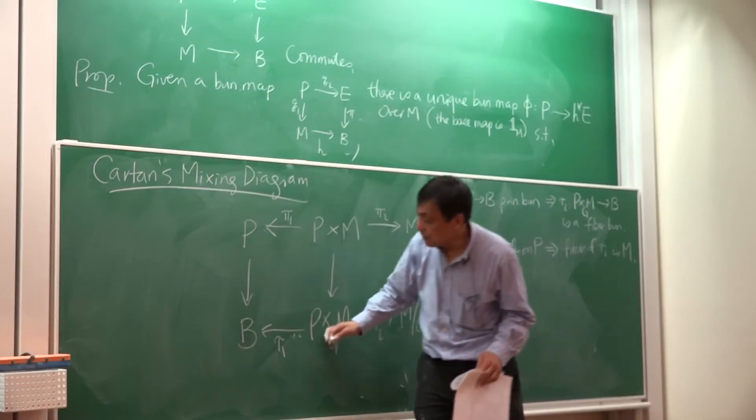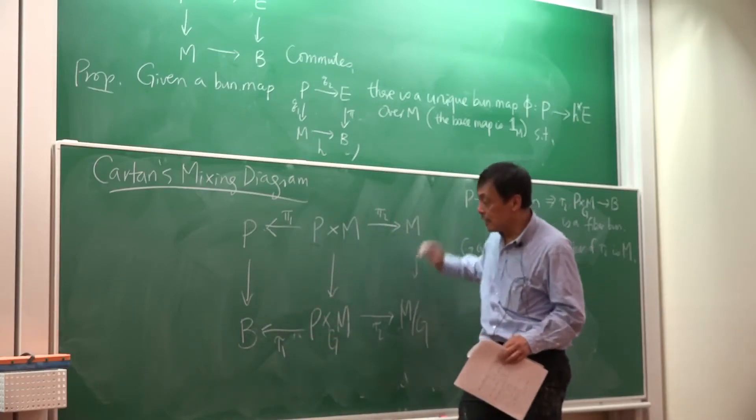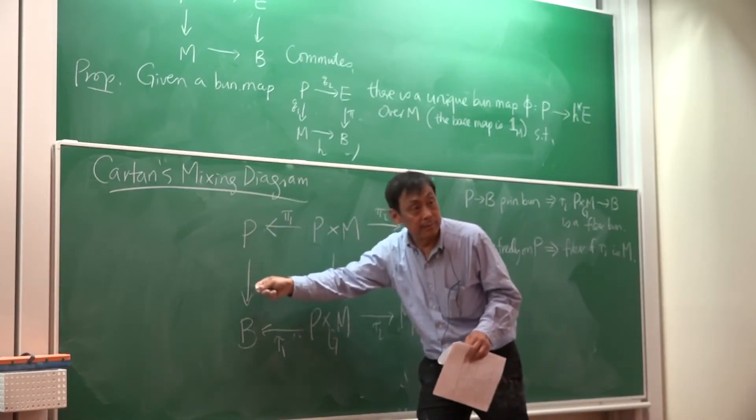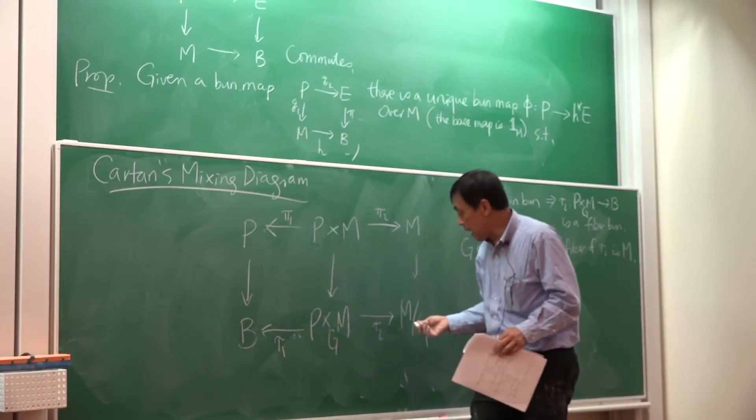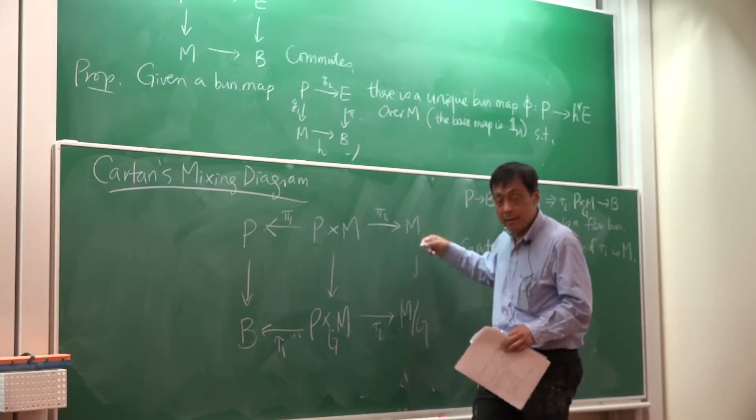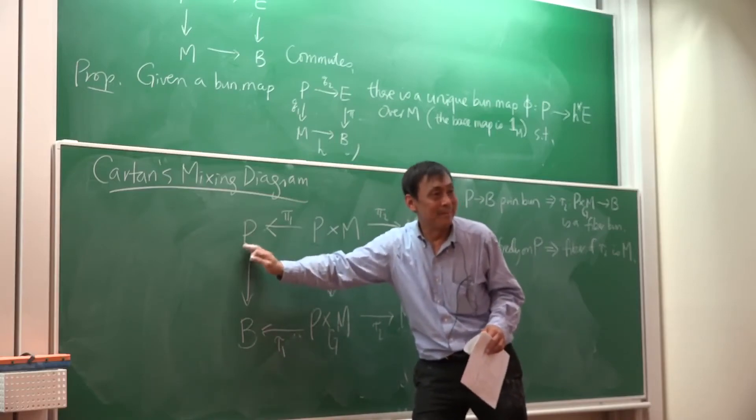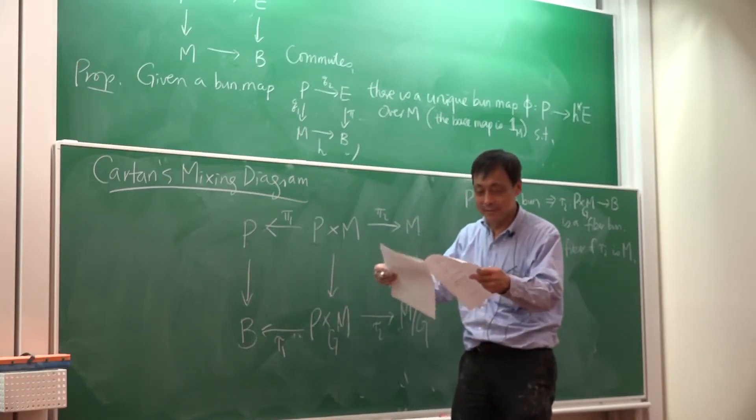It's going to be P, okay? So the fiber of this map is this corner, because G acts freely on this. And if G acts freely here, then the fiber of this map will be that one, will be this corner, okay? All right, so that's how it works.